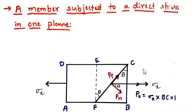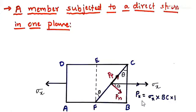We take a rectangular member of uniform cross section with unit thickness, so the area of BC is BC into 1, where 1 represents the unit cross section. Stress into area gives the load value due to this stress. This stress can be resolved into two components, from which we can find the normal and tangential (shear) stress on the oblique section.